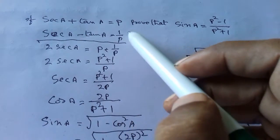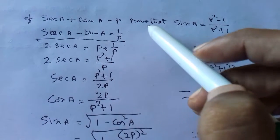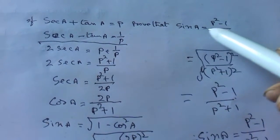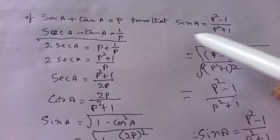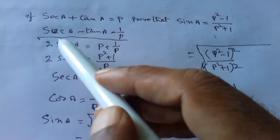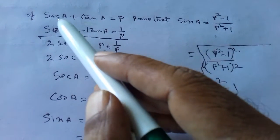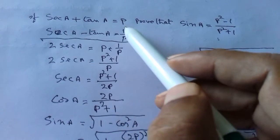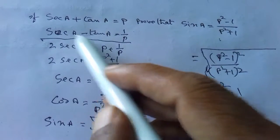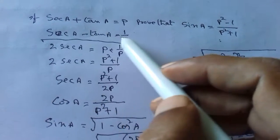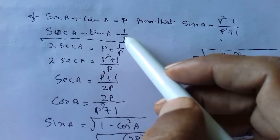If secA plus tanA is equal to P, then prove that sinA is equal to P square minus 1 by P square plus 1. Given secA plus tanA is equal to P, then we can write secA minus tanA is equal to 1 by P.